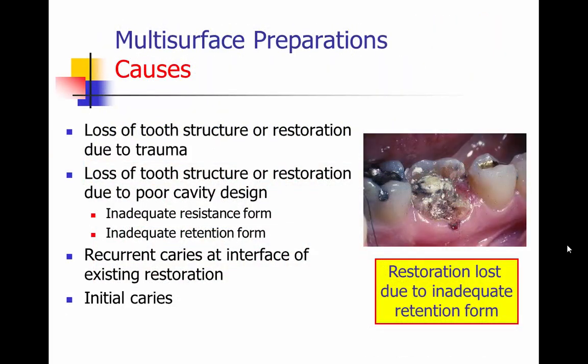First we have to look at why we're doing foundations, why are we doing cores for natural teeth. The causes for the need for these multi-surface preparations and cusp replacement restorations are due to loss of tooth structure or restoration due to trauma, loss of tooth structure due to poor cavity design, inadequate resistance form, inadequate retention form, or recurrent caries at an interface of an existing restoration — a restoration so large that the consideration, once it's restored with a foundation, is that you'll be doing a crown.